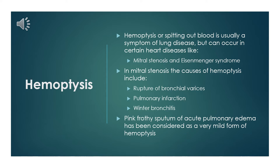In mitral stenosis, the causes of hemoptysis include rupture of bronchial varices, pulmonary infarction, and winter bronchitis. Pink frothy sputum of acute pulmonary edema has been considered as a very mild form of hemoptysis.